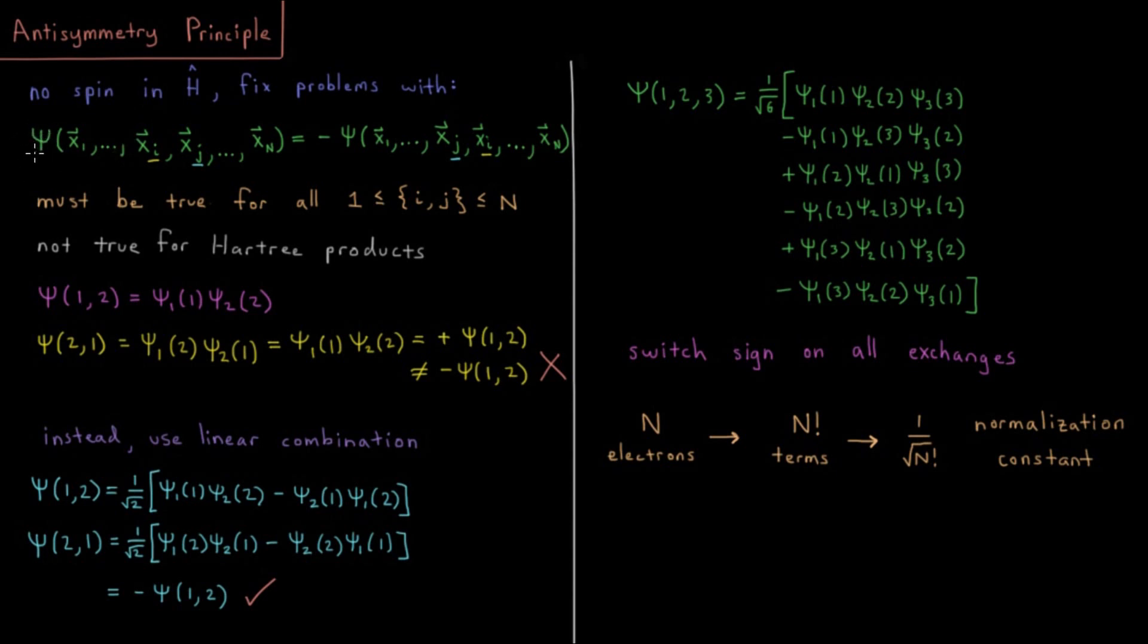So that is the following. If we have some electronic wave function of a bunch of electrons, we have the coordinates of electron 1, 2, etc., all the way up to electron n. Then if I pick electron i and electron j and I swap the two of them, so electron i is now where electron j was, electron j is now where electron i was, what should happen is the following. We should get the exact same wave function except for the sign should be switched. And this should be true for every electron, so i and j could be any value between 1 and n as long as i and j were different numbers.